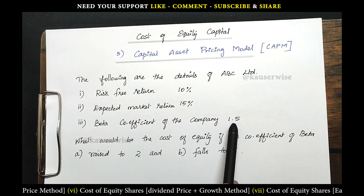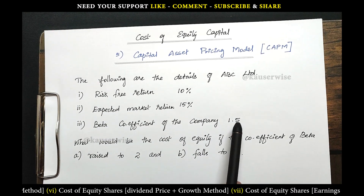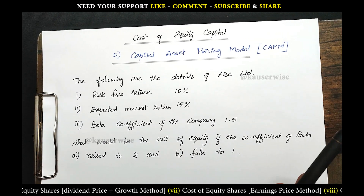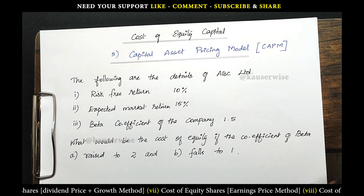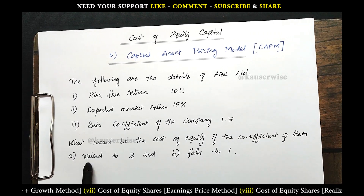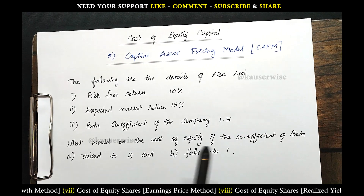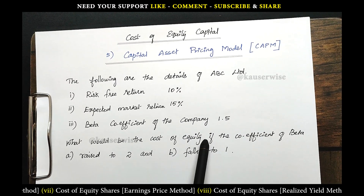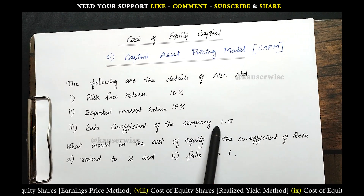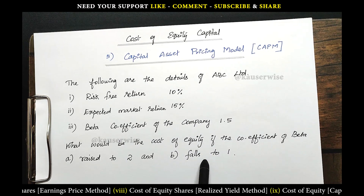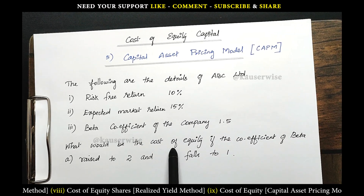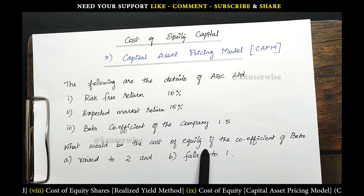The present beta value is 1.5. They are asking you to find out the present cost of equity, as well as if the beta value is raised to 2, what will be the cost of equity? And the second case is if the beta value falls to 1, from 1.5 to 1, what will be the cost of equity?